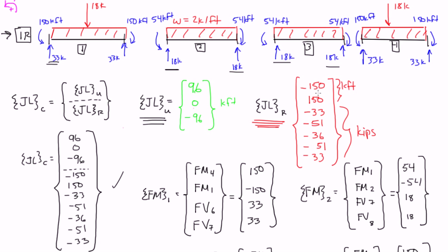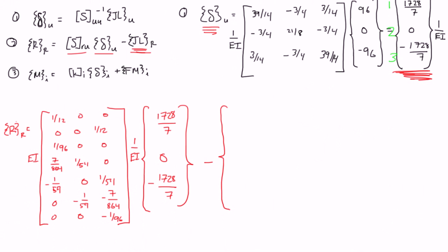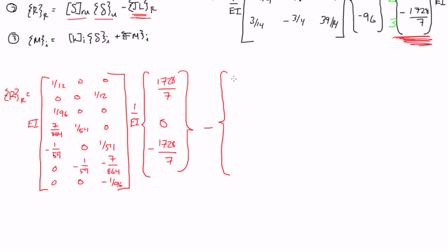And remember, we calculated that a little while ago. It's this matrix. We used the unrestrained for the deformation. Now we're using the restrained joint load for our reactions. And that's negative 150, 150, negative 33. So I'm going to write that here. I'm going to write negative 150, 150, negative 33, negative 51, negative 36, negative 51, and negative 33. And notice that the EI cancels out.